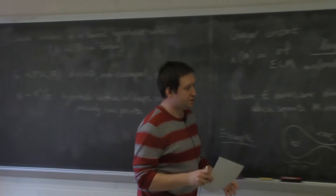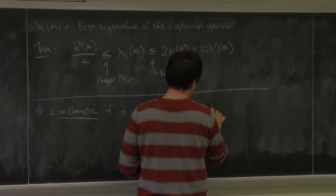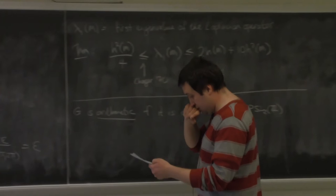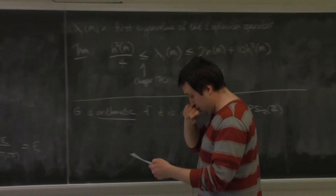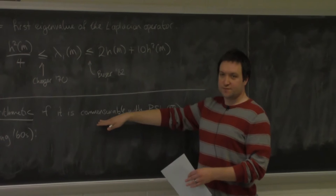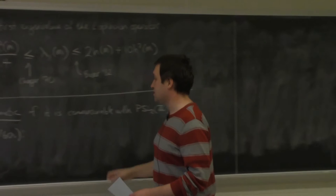I've specifically chosen my groups to be non-cocompact, partly to make this definition easy. G is going to be arithmetic if it is commensurable with PSL_2(Z) — in other words, G and PSL_2(Z) share a finite index subgroup in common. There's a theorem from Heinz Helling in the 60s which characterizes such subgroups. Clearly finite index subgroups of PSL_2(Z) satisfy this condition.